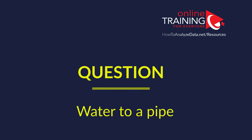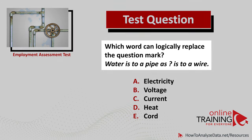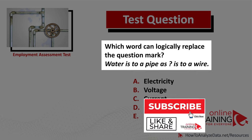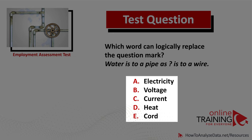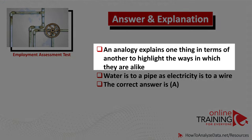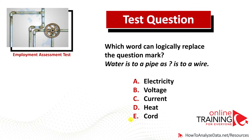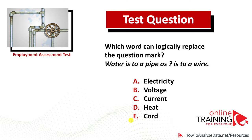Let's look at a tricky question which tests your knowledge of synonyms and analogy. Which word can logically replace the question mark? Water is to a pipe as something is to a wire. The choices are: electricity, voltage, current, heat, or cord. In logical terms, this asks you to explain things in terms of another and highlight ways they are alike. Water is to a pipe as electricity is to a wire. The correct answer is choice A: electricity.